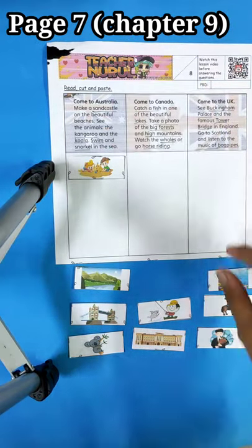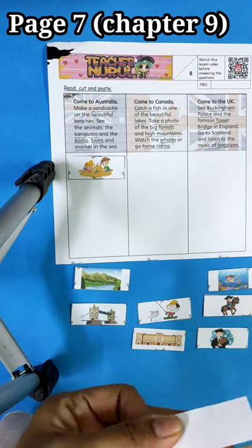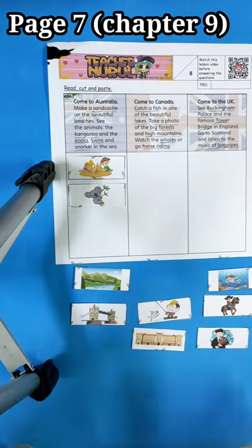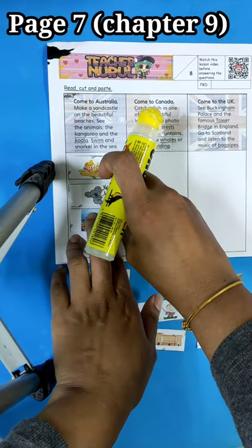We have koala. Yes, we have koala here. The next one is swim and snorkel. Any swim and snorkel? Yes, we have it here. Swim and snorkel.